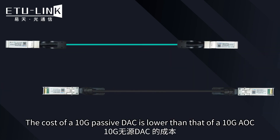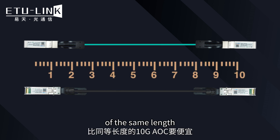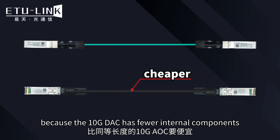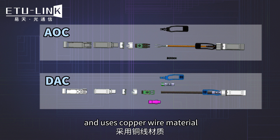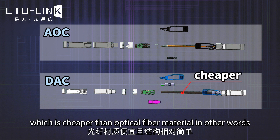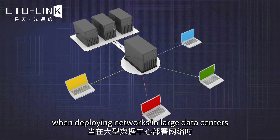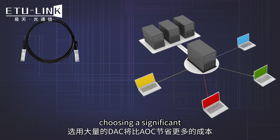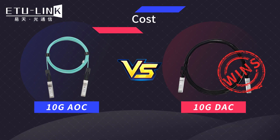The cost of a Tianji passive DAC is lower than that of a Tianji AOC for the same link length, because the Tianji DAC has fewer internal components, a relatively simple structure, and uses copper wire material, which is cheaper than optical fiber material. In other words, when deploying networks in large data centers, choosing a significant quantity of DACs will save more costs compared to AOCs. For cost, Tianji DAC wins.